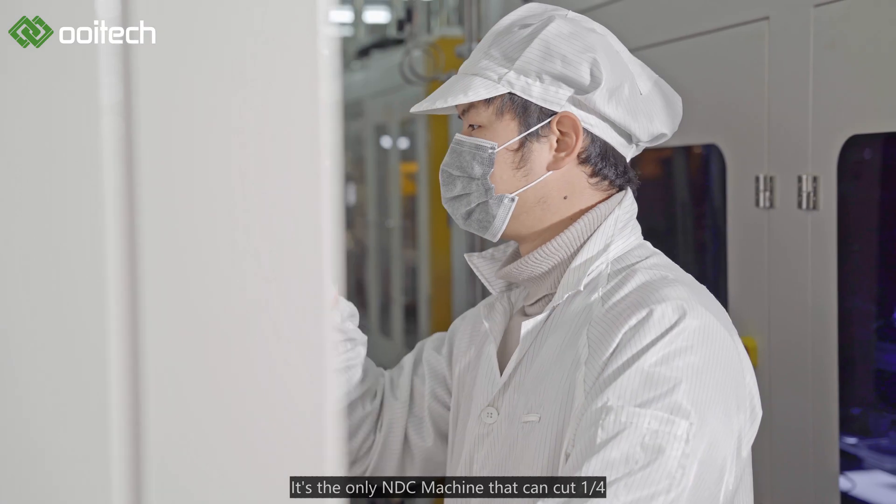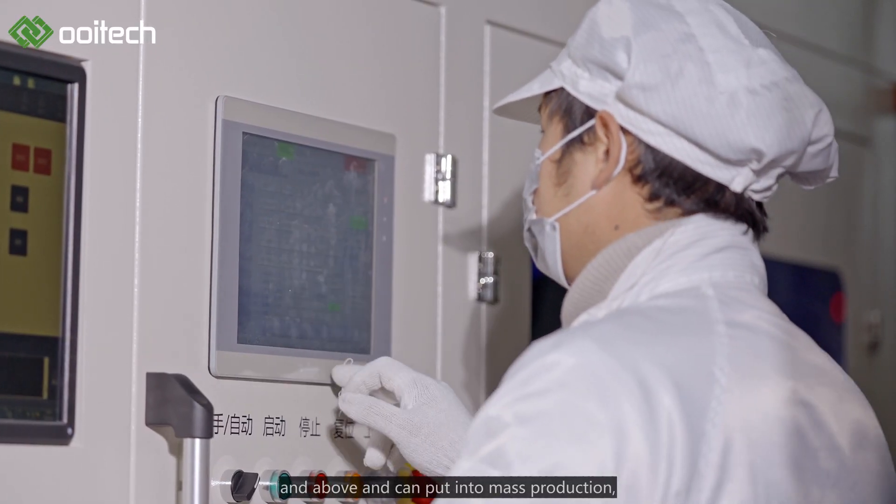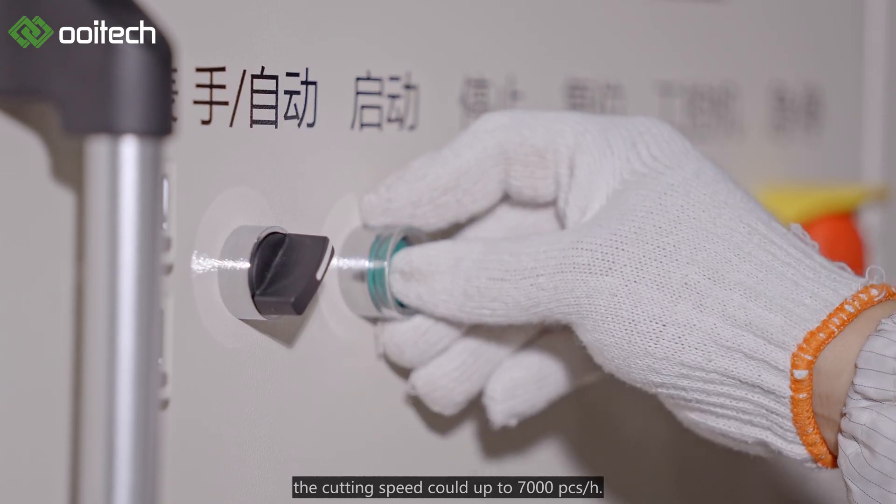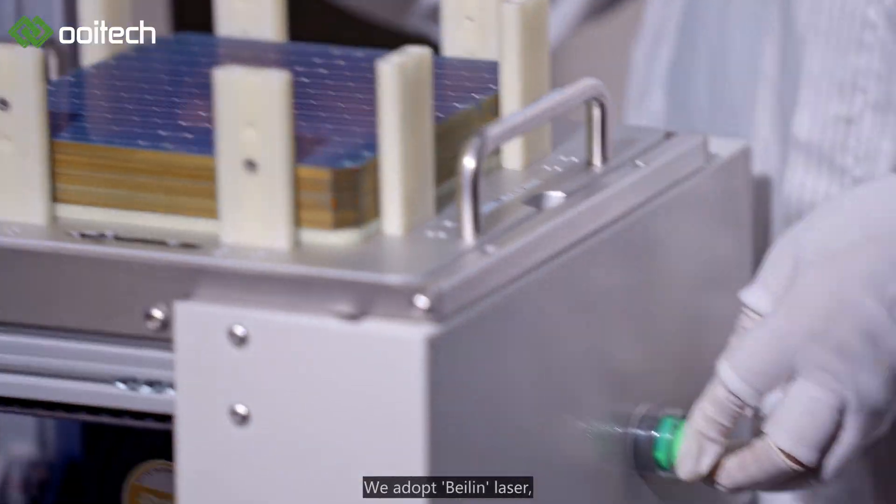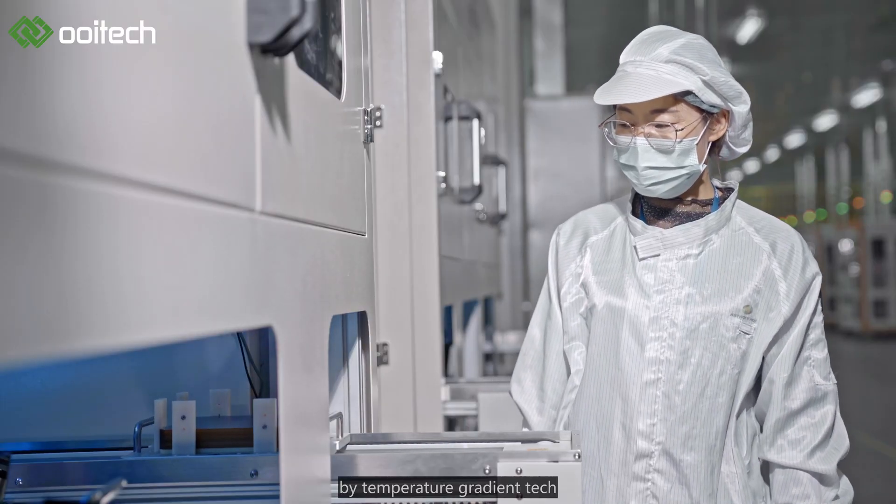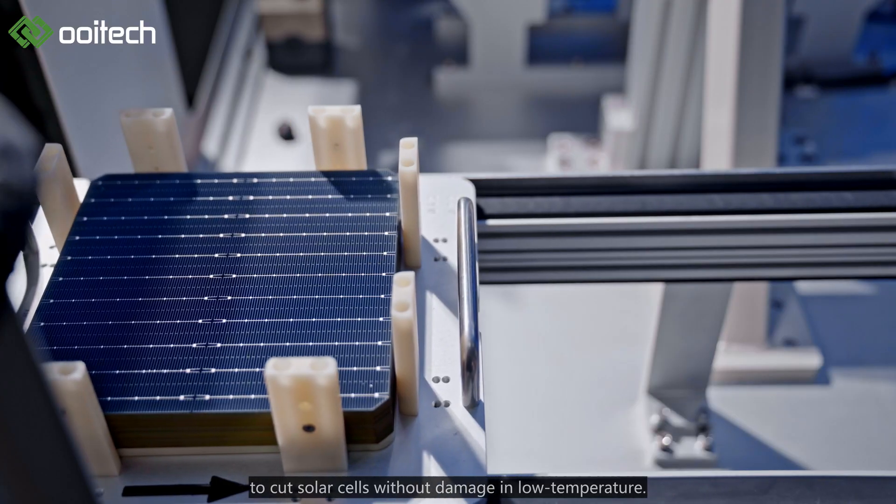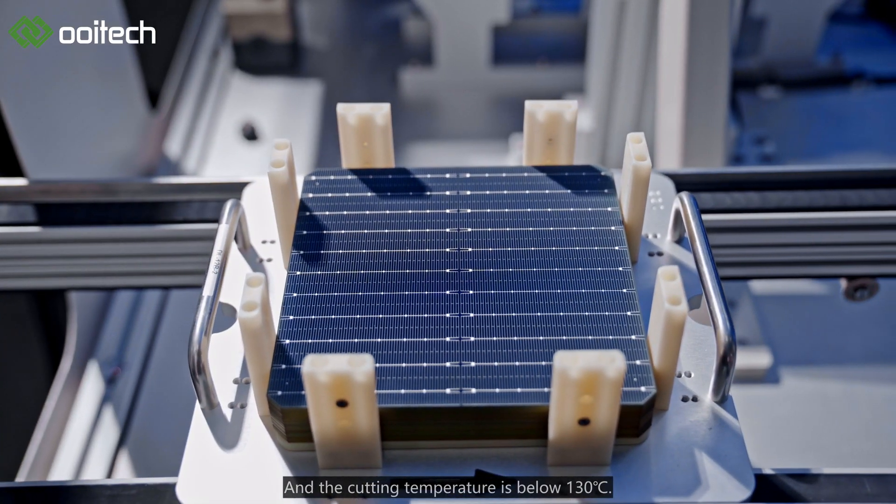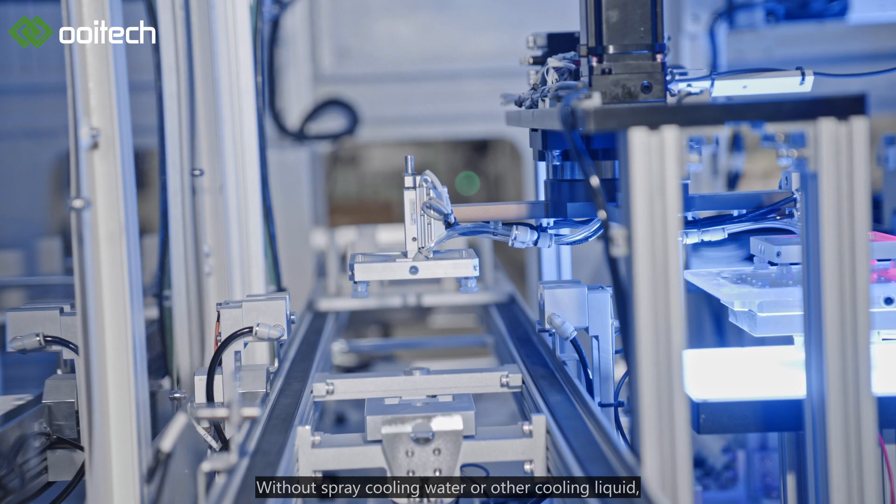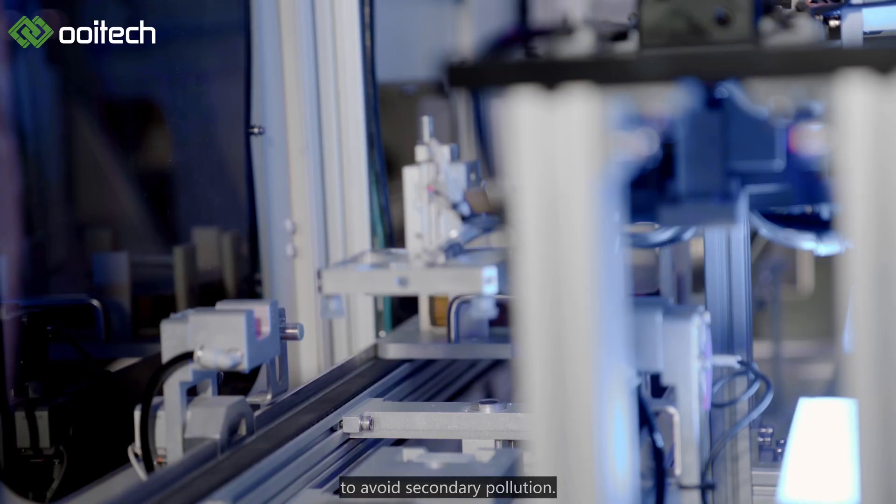It's the only NDC machine that can cut one-fourth and above for mass production. The cutting speed can reach up to 7,000 pieces per hour. We adopt Valen Laser Temperature Gradient Tech, a thermal laser separation technology to cut solar cells without damage in low temperature below 130 degrees, without spray cooling water or other cooling liquid to avoid secondary pollution.